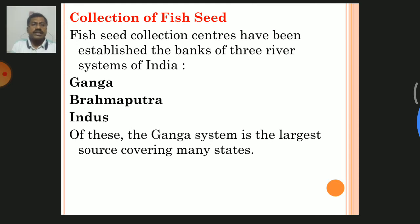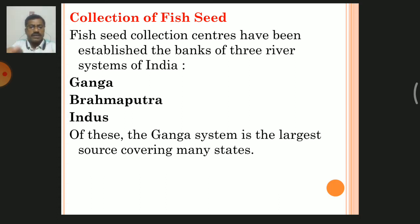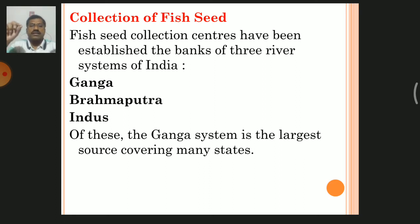For collection of fish seed, fish seed collection centers have been established on the banks of three river systems of India, because the Indian major carps generally breed in rivers and those river banks are the centers of fish seed collection.